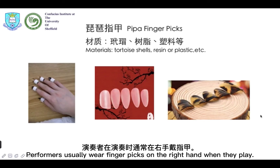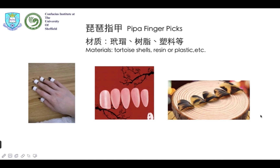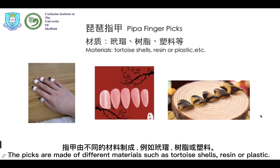Performers usually wear finger picks on the right hand when they play. The picks are made of different materials such as tortoise shells, resin or plastic.